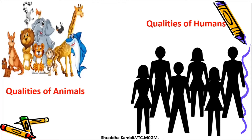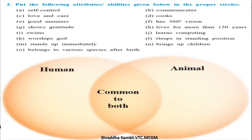Let us start with the warming up activity where we compare qualities of animals and human beings — which quality the animal possesses, which is possessed by humans, and which are common to both. The question says: put the following attributes or abilities in the proper circles. Attributes and abilities are different words for qualities. Keep your dictionary handy — it is a very important part of learning English. Whenever you find a difficult word, look it up.